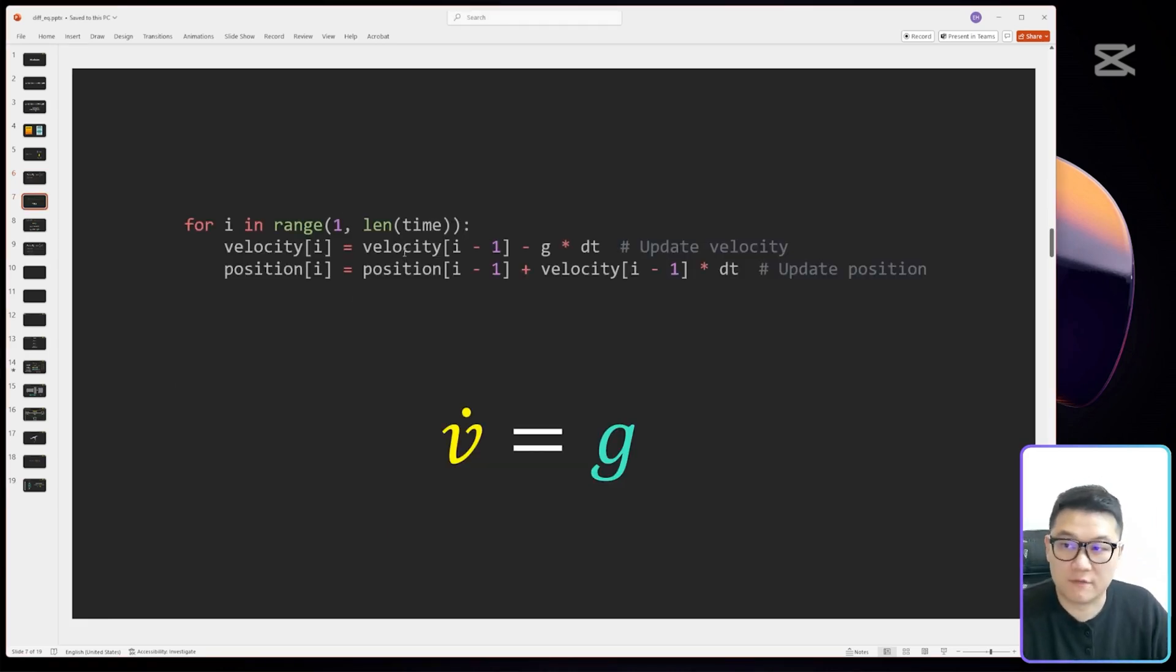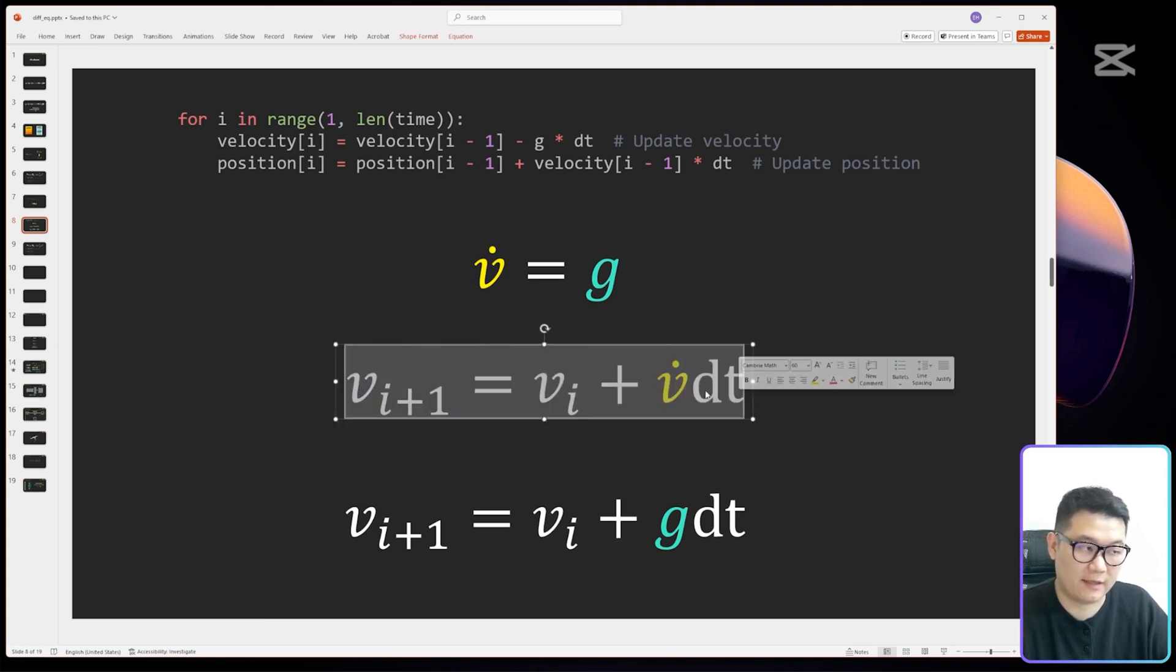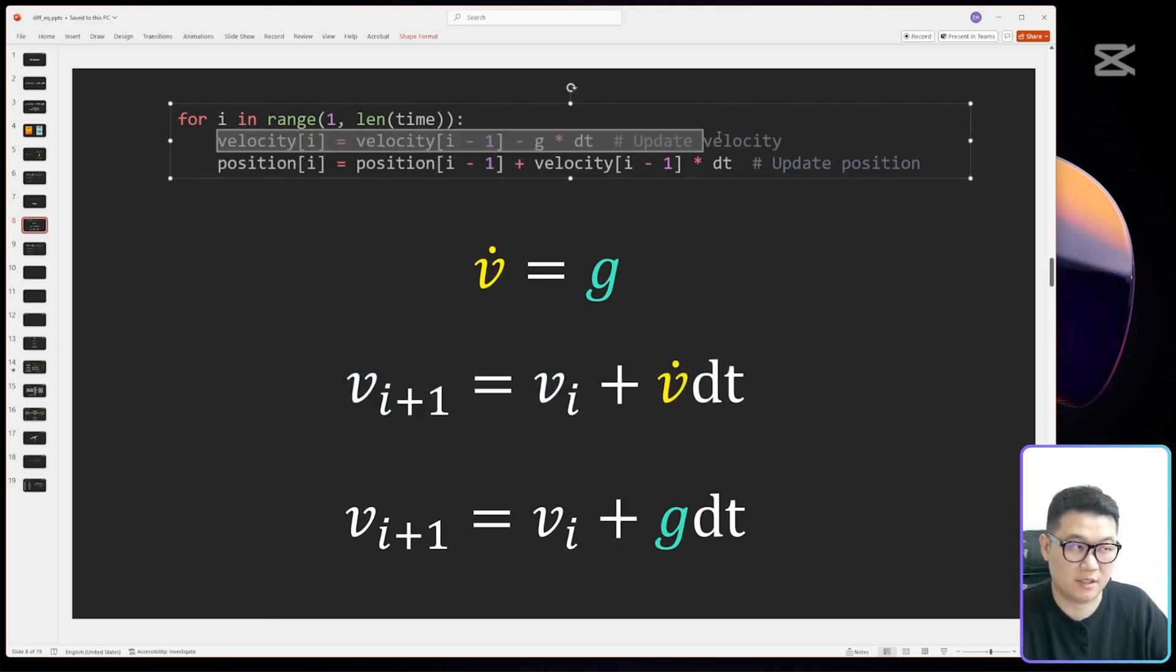If I simply convert this for loop into math, this single line is the differential equation, and they are exactly the same, for the velocity part at least. So v dot, which is dv/dt, is acceleration. That acceleration for freefall is the same as gravitational acceleration. If I expand it into code, it's just v dot times dt plus previous v.